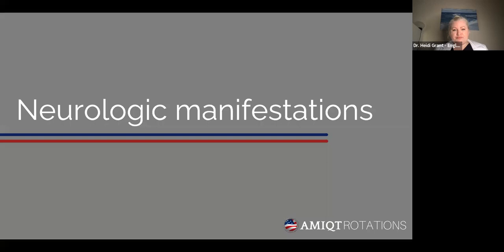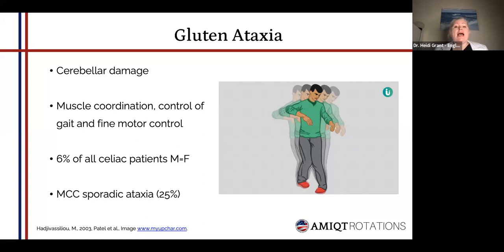So some of the neurologic manifestations — the main one to look at is gluten ataxia. This classically affects the cerebellum. It affects muscle coordination, gait, and fine motor control. It'll be found in about 6% of all celiac patients, about equal between males and females. It's the most common cause of sporadic ataxia — about 25% of all sporadic ataxia are due to celiac disease.